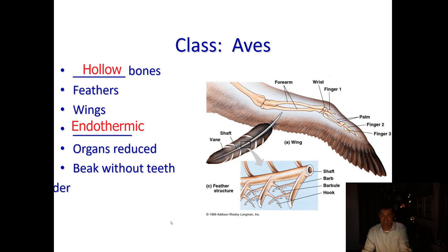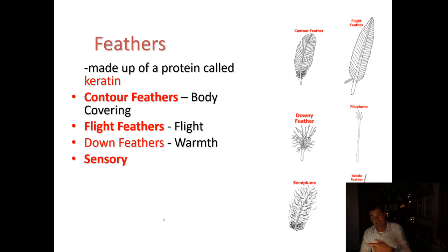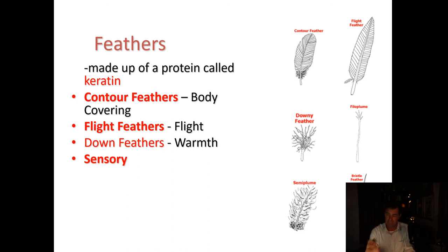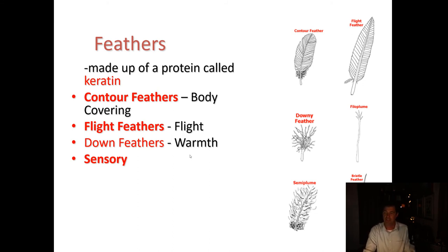Birds have a beak without teeth. There are a whole bunch of different types of feathers — feathers are made out of a protein called keratin, the same protein as your fingernails and hair. They have contour feathers that cover their body, specialized flight feathers that allow them to trap air and make a wing foil, and down feathers. Down feathers are the puffy little feathers with highly branched little puffs, designed to trap heat. Birds that live in really cold environments utilize these down feathers for warmth. There are also various sensory feathers on their feet and face that allow them to sense the environment.